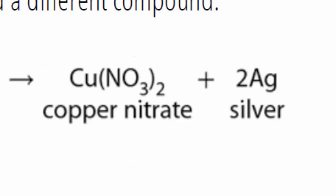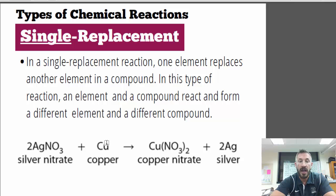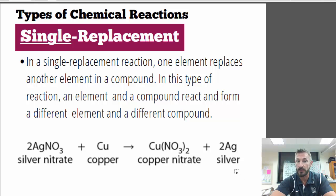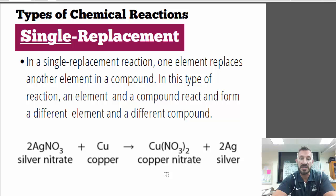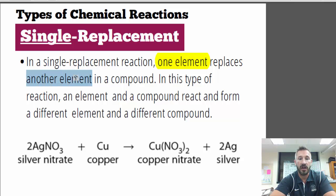Another example: if we take copper and mix it with silver nitrate, the copper is the element and it replaces the silver. The products are silver by itself as an element and copper nitrate. We see one element replaces another element in a compound — that's a single replacement. So you have: element plus compound → element plus compound.